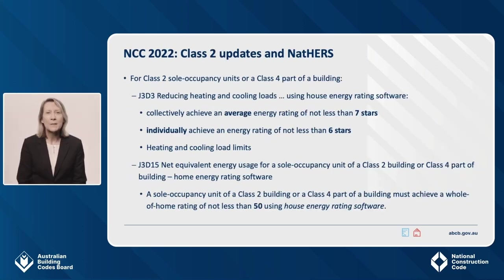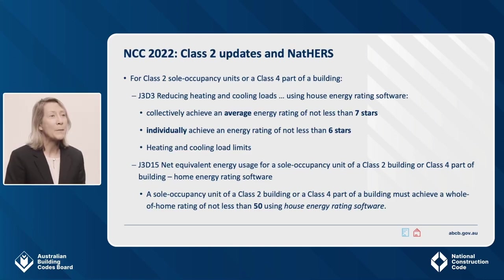There are some specific changes and updates to Class 2 buildings, with an individual apartment requiring a rating of 6 stars, but the average across the whole building is required to be 7 stars. There are also updated heating and cooling load limits, like Class 1 dwellings. For whole-of-home, every apartment must rate at least 50. There is no building average for whole-of-home — every apartment must meet the same target.